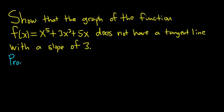To do this we're going to use a proof by contradiction. So we'll start by assuming that it does have a tangent line with a slope of 3 and then we'll try to reach a contradiction. So let's start by saying suppose it did. So what we're saying here is that suppose it does have a tangent line with a slope of 3.